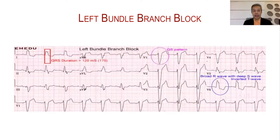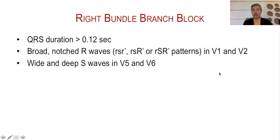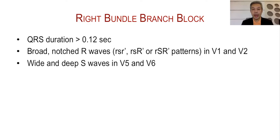So these are the changes in LBBB: QRS greater than 120 milliseconds, a QS pattern, and broadening and notching in V5 and V6. The opposite will happen in patients with right bundle branch block. The common criterion they share is the broadening and notching of the QRS. But instead of seeing V5 and V6 broad and notched as in LBBB, we will now see broadening and notching of the R waves in the right ventricular leads V1 and V2, while deepening of the S waves will be seen in V5 and V6.